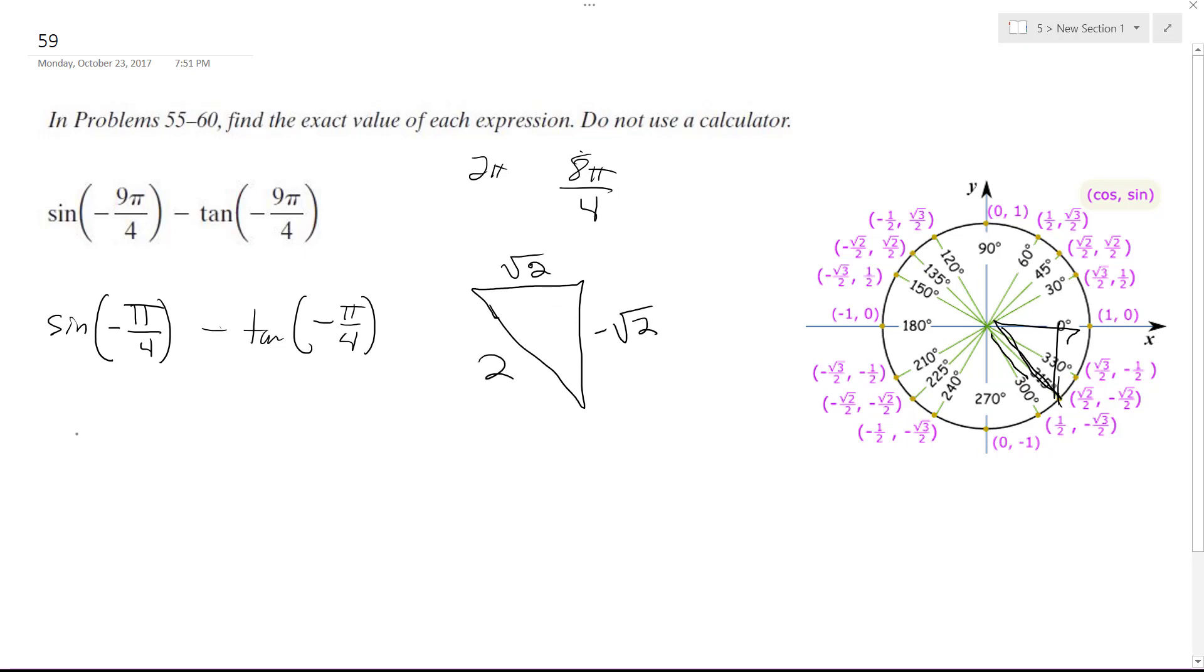So the sine in this case is going to be negative √2 over 2 minus, and then tangent, which is sine over cosine, so y component negative √2 over √2.